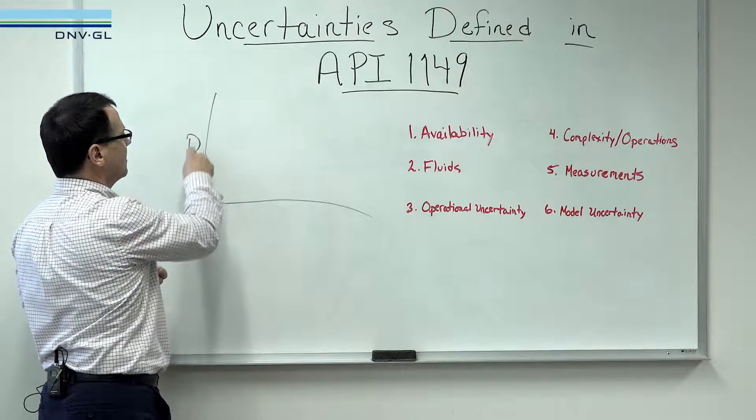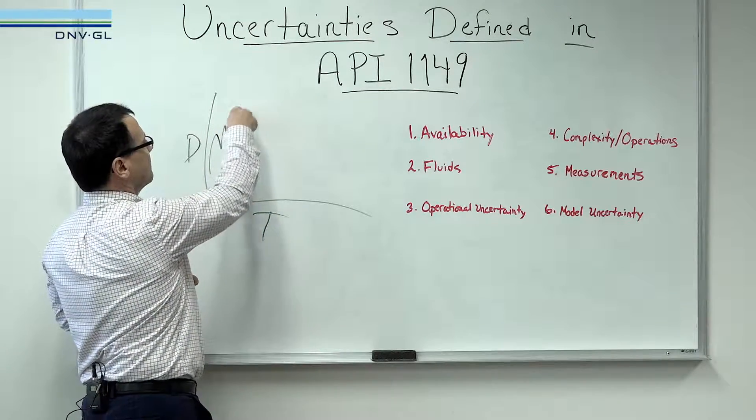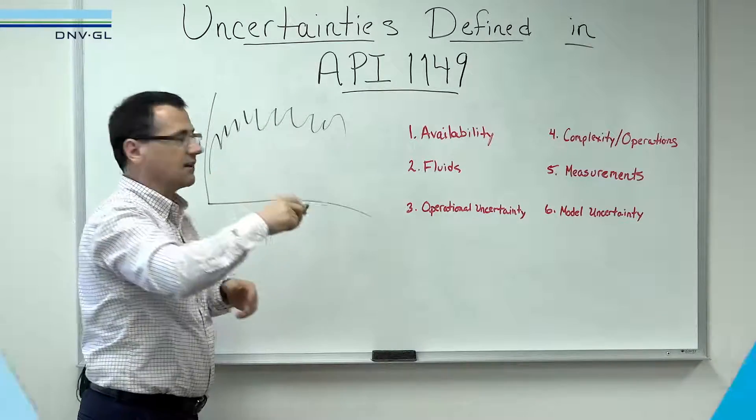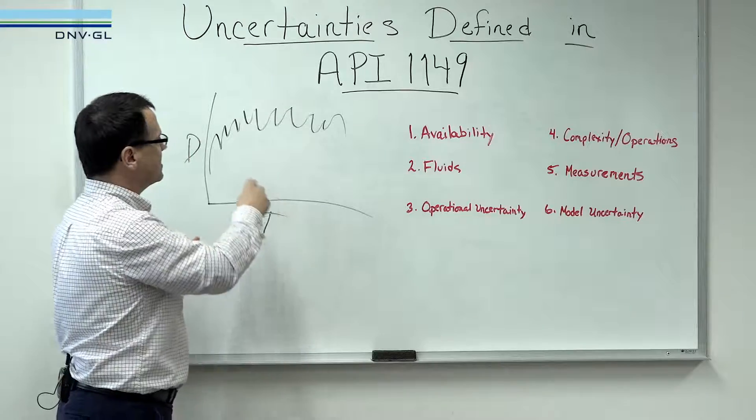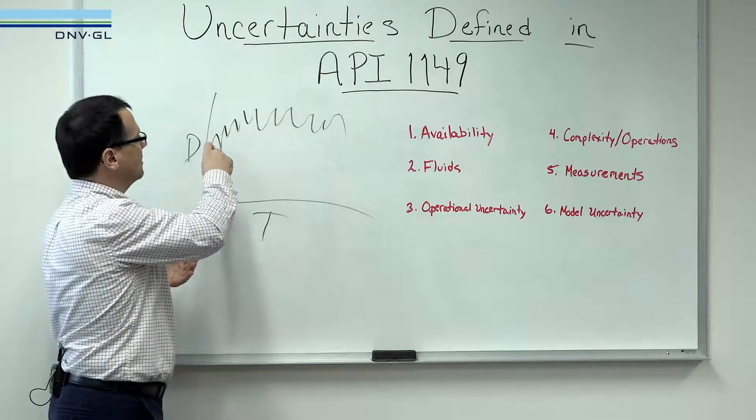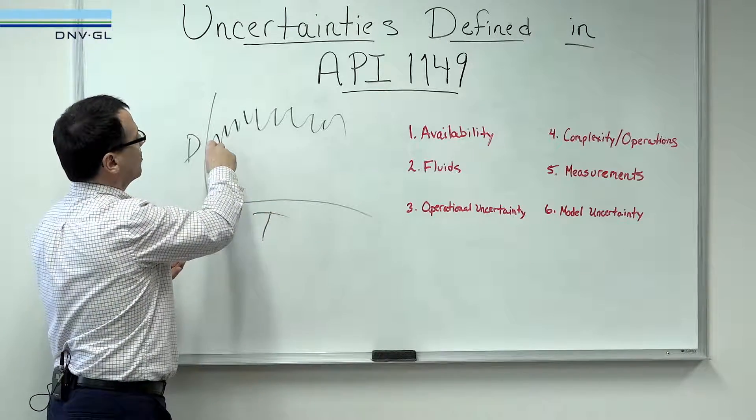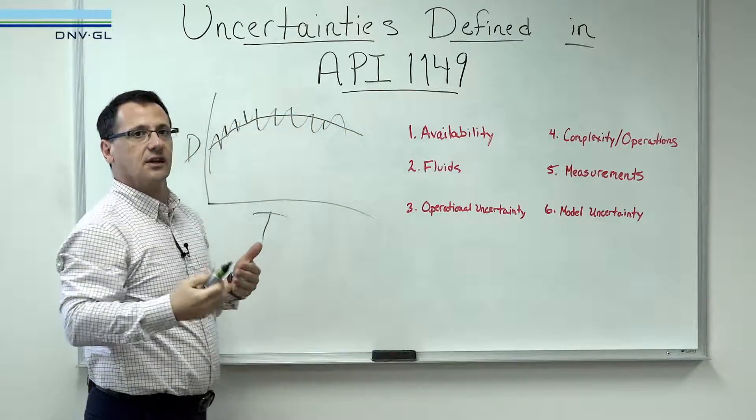If you take a look at the data coming in from the field into the SCADA system, it looks something like this. It's very spiky and clunky. What the DNV GL does is it takes the data coming in from the field using hydraulic simulation, and it normalizes the data, improving the quality and replacing the imperfect data.